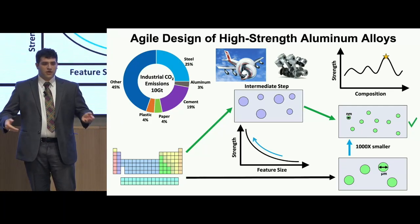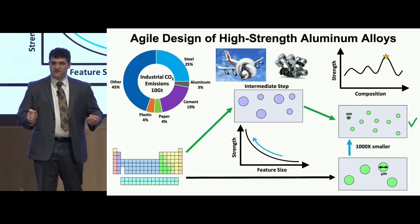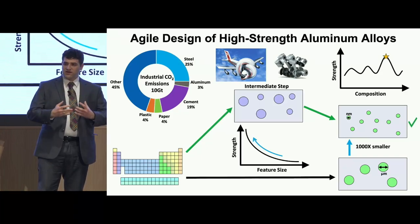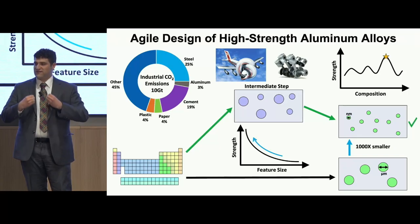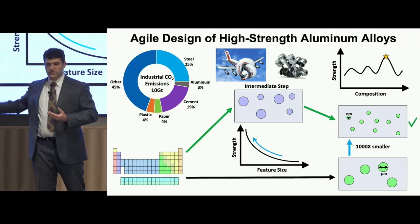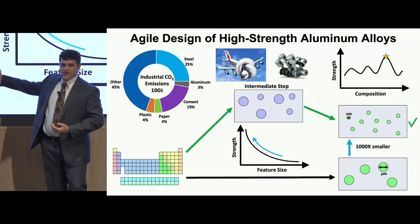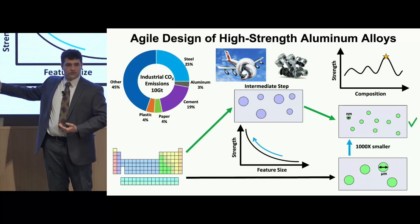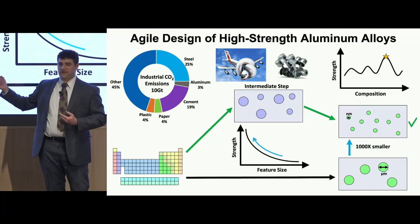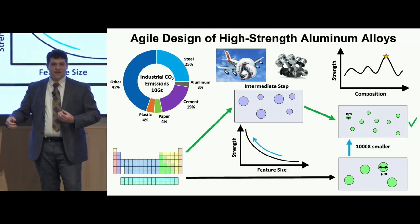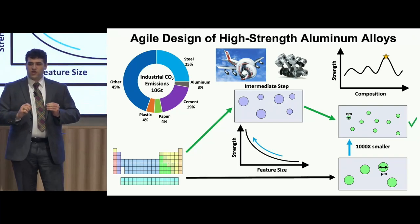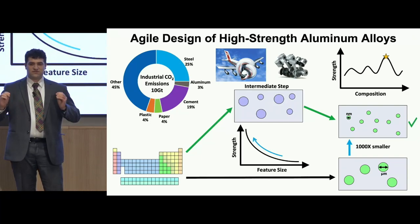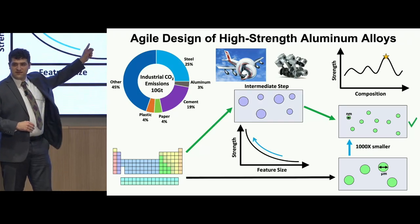So how do we solve this? Well, we alloy the aluminum — we introduce new elements to it that resolve into strengthening phases and features. But which elements? We have dozens on the periodic table and millions of possible combinations and permutations. And once we select a certain subset of elements, how do we know what fractions and combinations they need to be in to achieve the best strengthening?